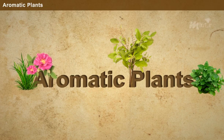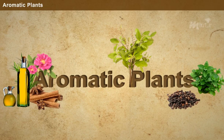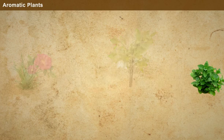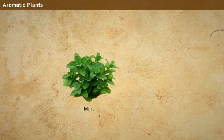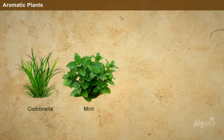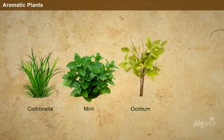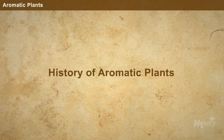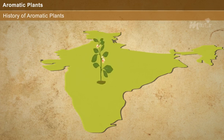What are aromatic plants? Aromatic plants are a special kind of plants used for various purposes due to the presence of aromatic substances. Examples include Mint, Citronella, Osimum, and Roses.